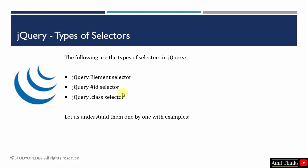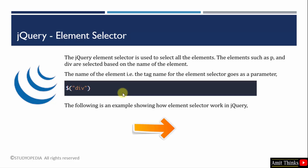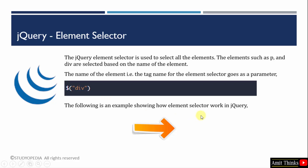Let us start with the element selector. The element selector is used to select elements — you just need to mention the name of the element and that's it. You can select a p element, a div, or any other element using this selector. You need to mention the name of the element as a parameter.